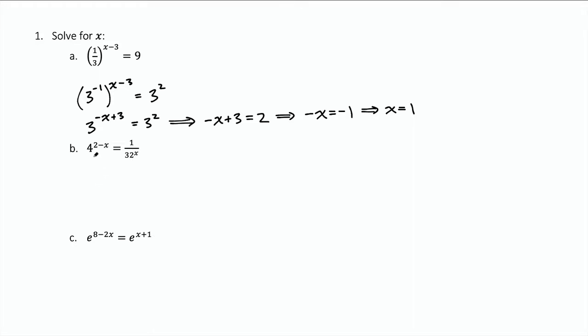For part b, again we like the same base here. And we do have a common base. Four and thirty-two can both be written as a base of two. So the four I write as two squared. We've got two squared to the two minus x. And then that thirty-two, that's two to the fifth. So two to the five raised to the x.